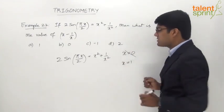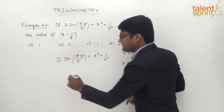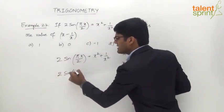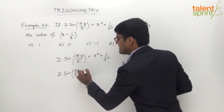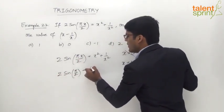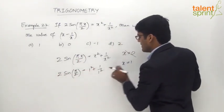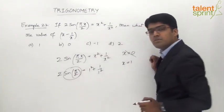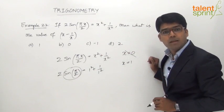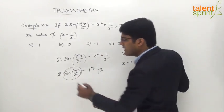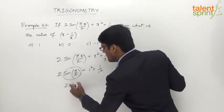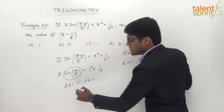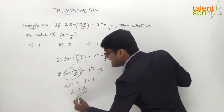Let's try with 1. Let's see what happens if we take x = 1. 2 times sine, x is 1, so π/2 × 1 is π/2. So 2 sin(π/2) = 1² + 1/1². Now what is sin(π/2)? Sin 90 degrees equals 1. So 2 × 1 equals what is this? 1² is 1 plus 1/1² is also 1.